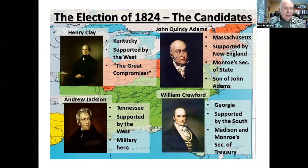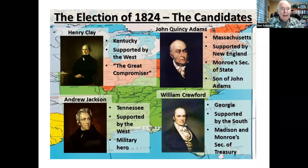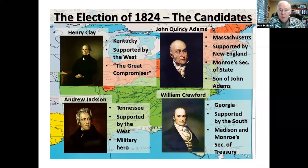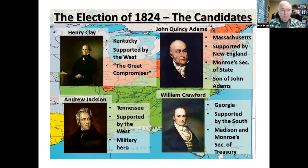As in 1800, newspapers vilified each candidate in extremely abusive language. Some newspapers made fun of Adams' slovenly dress. Other newspapers ridiculed Henry Clay as a drunkard and a gambler. Some newspapers charged William Crawford, who was secretary of the treasury, with malfeasance in office. Other newspapers accused Jackson of being a murderer for having authorized the execution of mutineers in 1813 and for having killed people in duels.